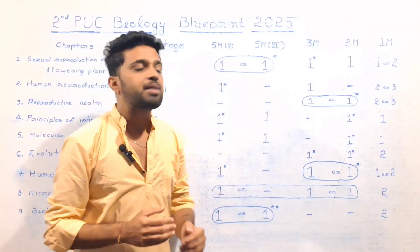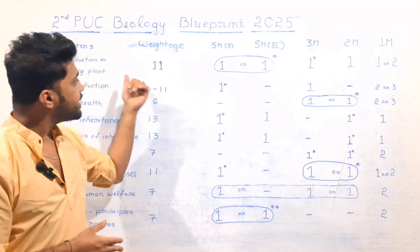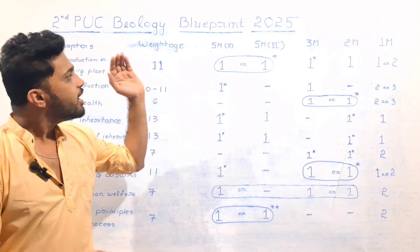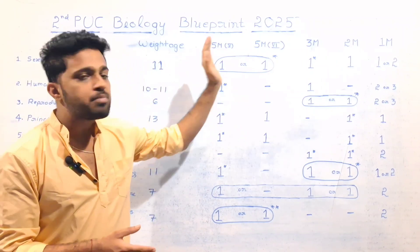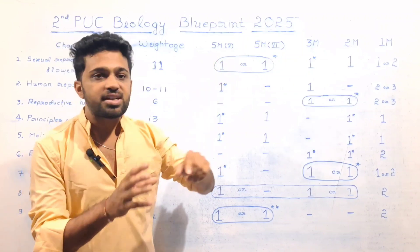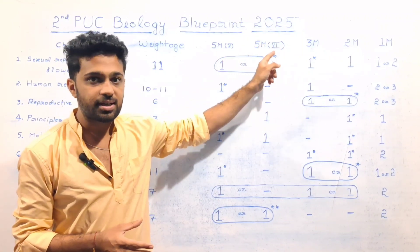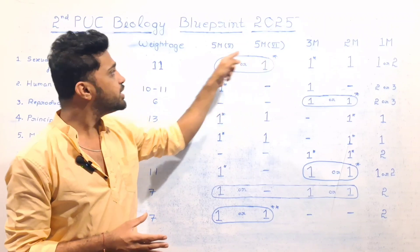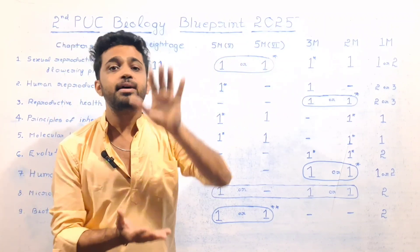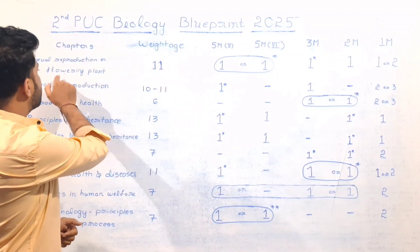Let's go to the first chapter: Sexual Reproduction in Flowering Plants. In this chapter, the question is 100%. Question Main 5 and Question Main 6. If you want to ask the Question Main 5, you can ask it. Five more questions are 100% from Sexual Reproduction in Flowering Plants.